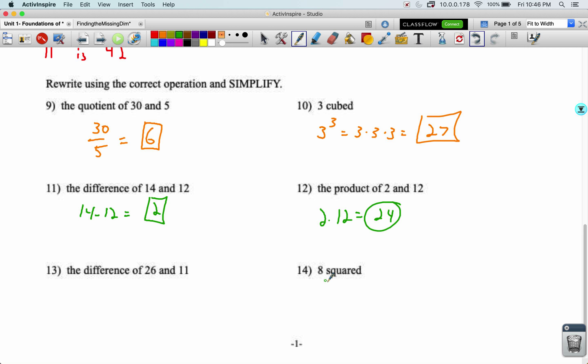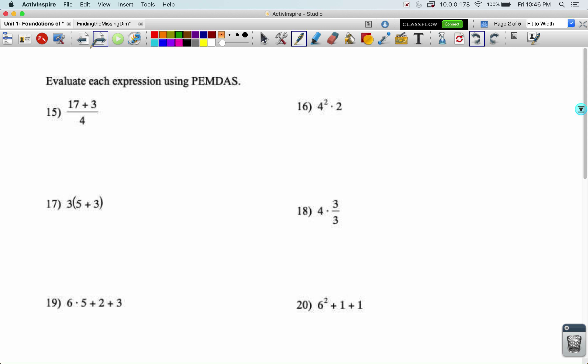Eight squared. So squared kind of like cubed, but it means an exponent of two. Eight squared is the same as eight times eight, which becomes 64.